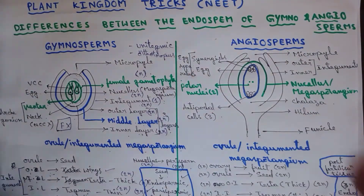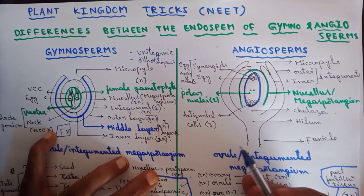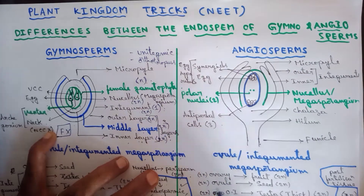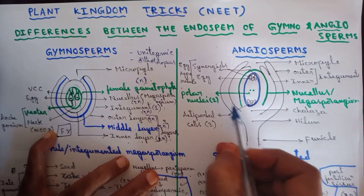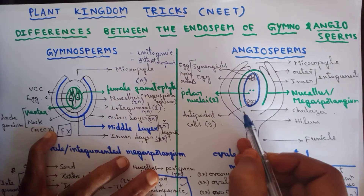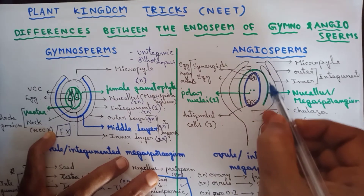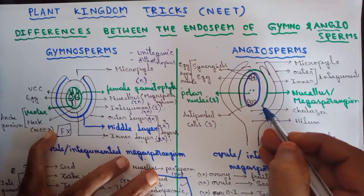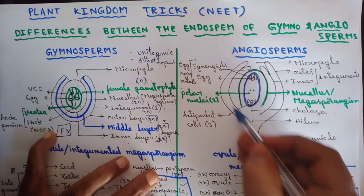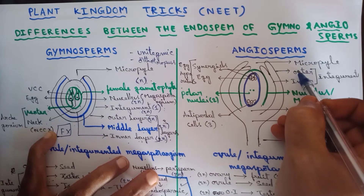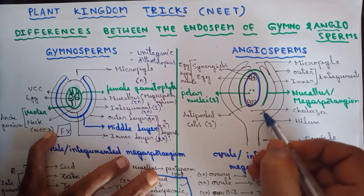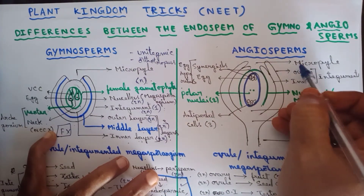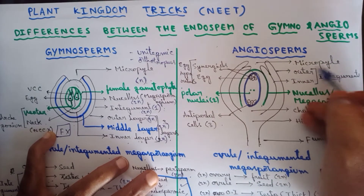Now coming to angiosperms: the ovule is covered by an ovary. The nucellus, which is the megasporangium, is covered by two integuments — inner integument and outer integument. These coverings cover the nucellus entirely except at the top, forming a pore called micropyle.